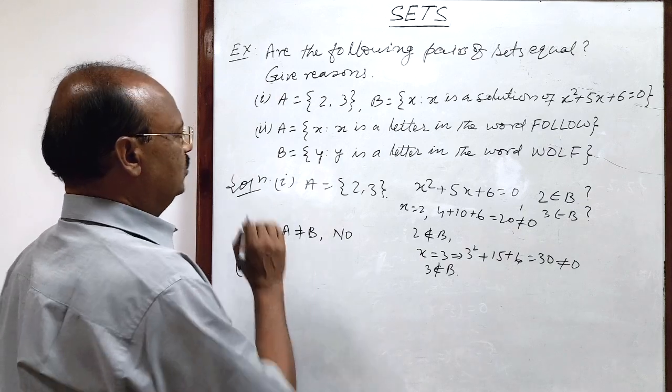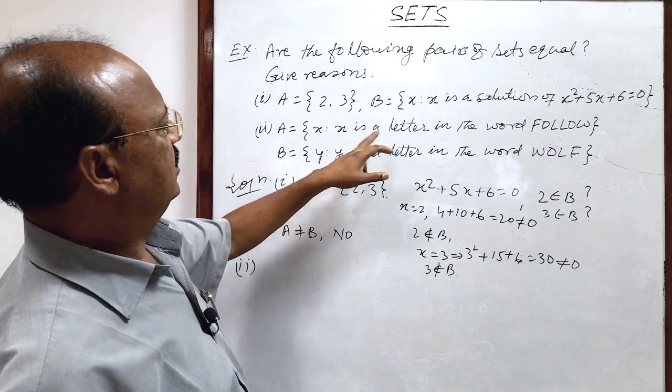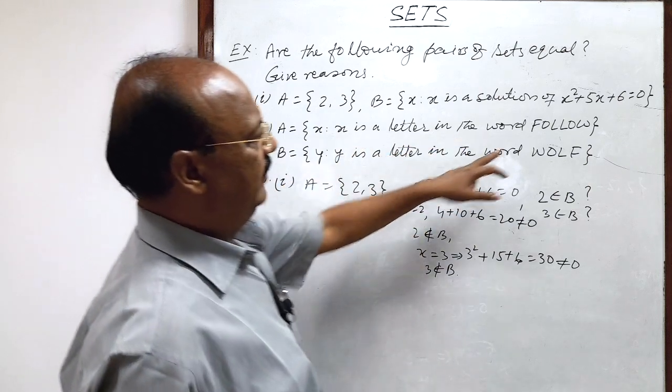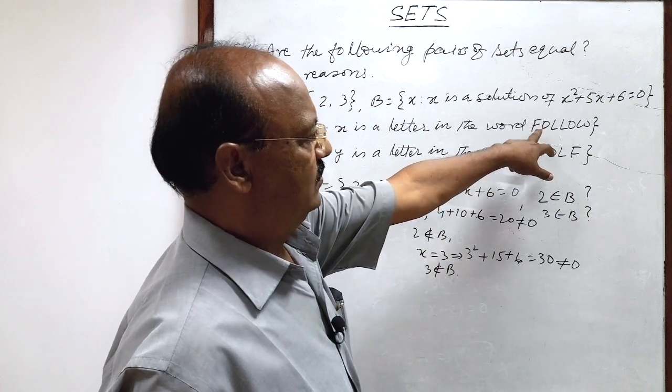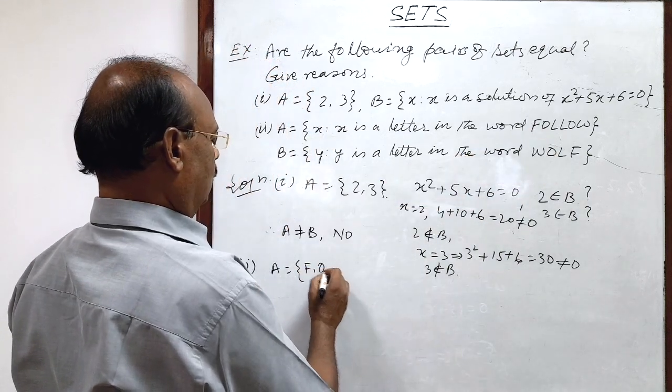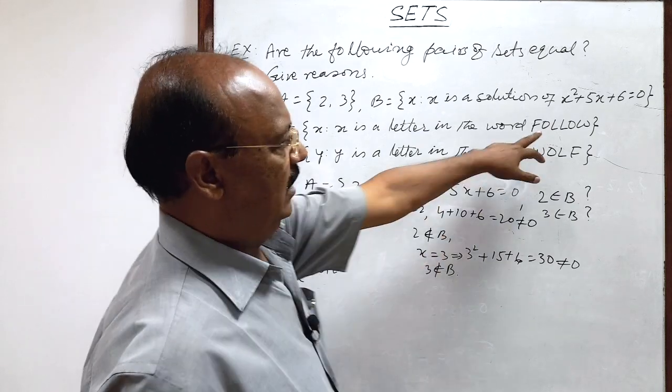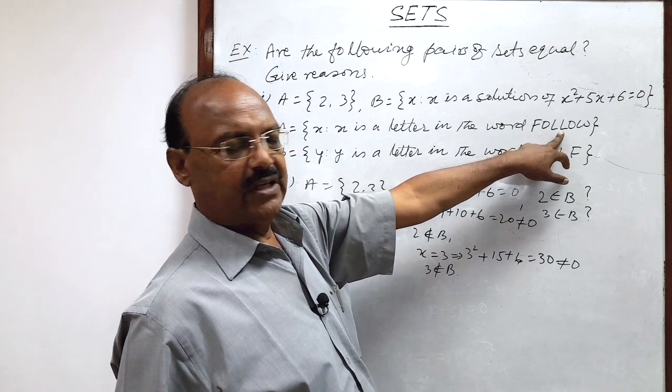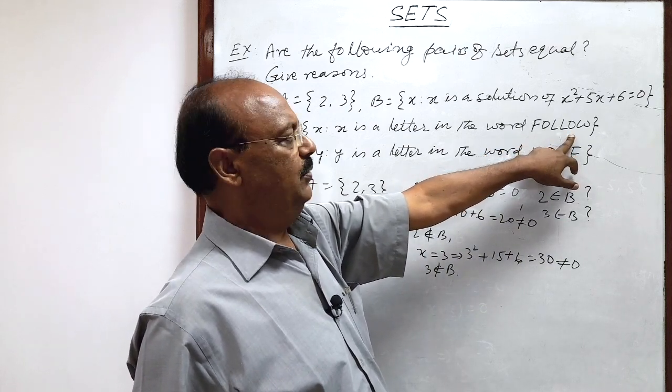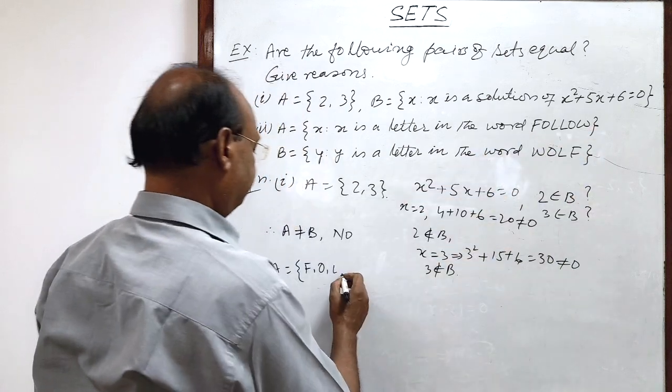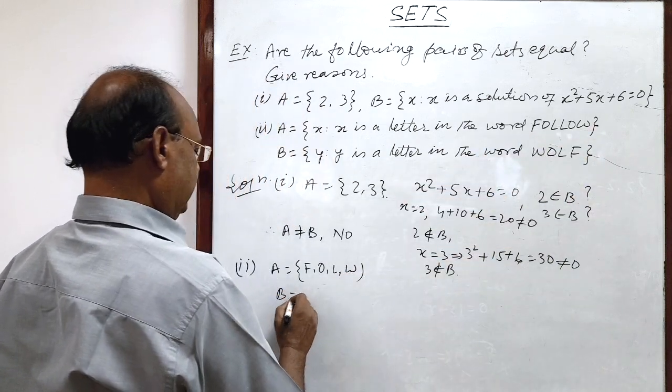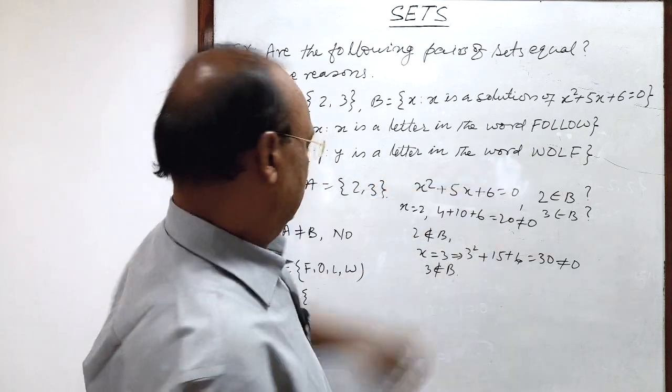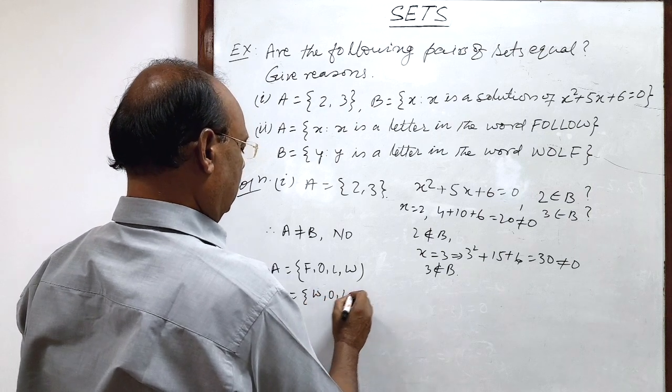In question number 2, x is a letter in the word follow. So what will be set A? Write the elements from the word follow: f, o, l. After l, again l is there - we will not repeat. In a set, elements are not repeated. Again, o cannot be repeated, and w.